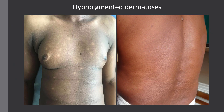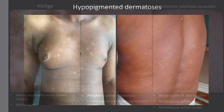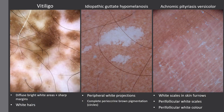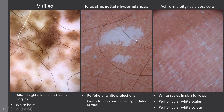The second group includes hypopigmented dermatoses. Clinical diagnosis in darker phototypes may be quite challenging. In vitiligo, the main dermoscopic clues include diffuse bright white areas with very sharp margins and white hairs — white hairs are not always present, but when they are, they are quite specific for vitiligo. In idiopathic guttate hypomelanosis, we have peripheral white projections, which are quite specific, and sometimes complete peracrine brown pigmentation or circles.